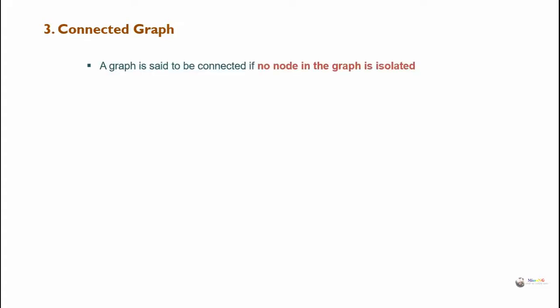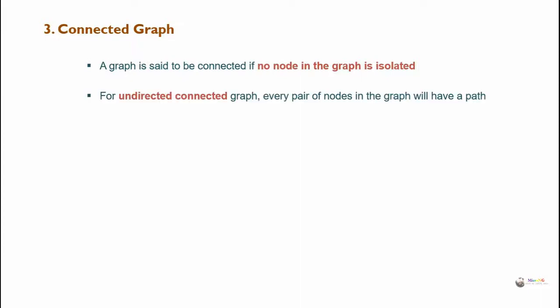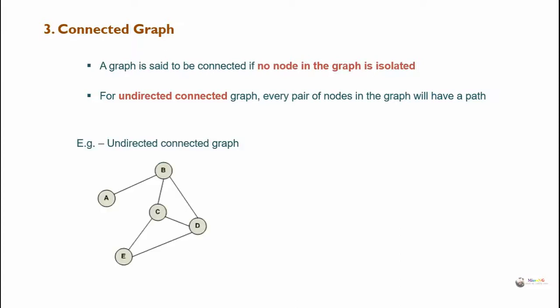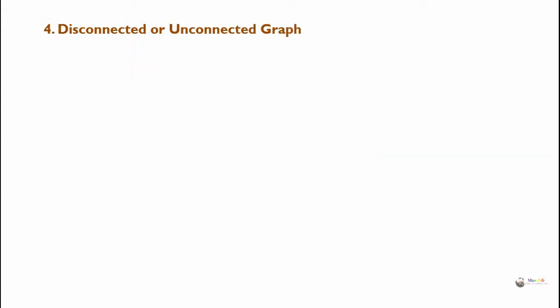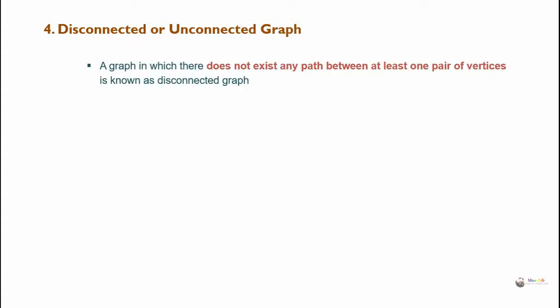Third, connected graph. A graph is said to be connected if no node in the graph is isolated. For an undirected connected graph, every pair of nodes will have a path. Fourth, disconnected or unconnected graph: a graph in which there does not exist any path between at least one pair of vertices is known as a disconnected graph.